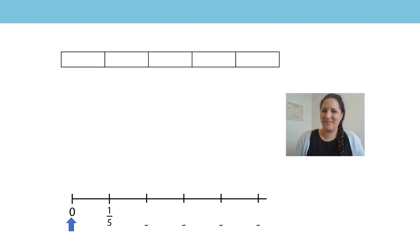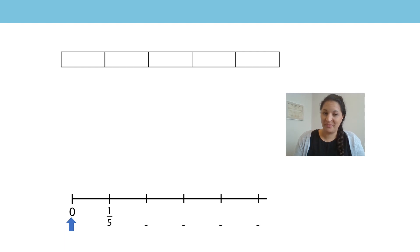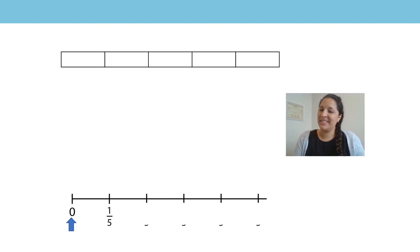What do we see here? We've got a bar model and a number line. What do you notice about them? Well, they've both been divided into five equal parts. So what would our unit fraction be? Well, it will be one-fifth. We know that when we count in unit fractions they make a non-unit fraction. For example, three lots of one-fifth make three-fifths. Let's have a go at counting in our unit and non-unit fractions using the bar model and number line to help us.